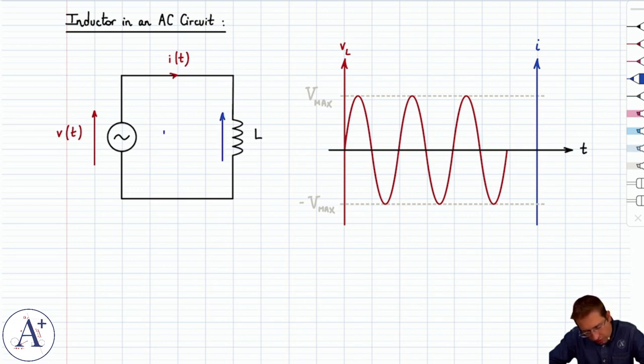The inductor is going to generate an induced EMF to oppose the increasing current, VL of t. And by the loop law, V(t) minus VL(t) is going to be equal to zero.